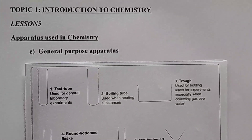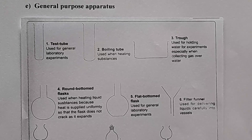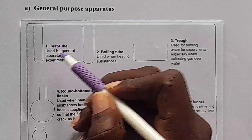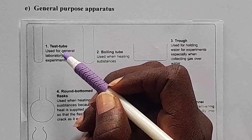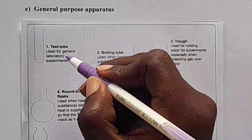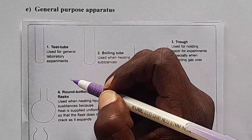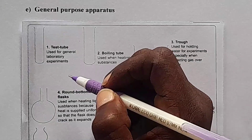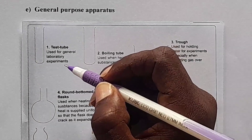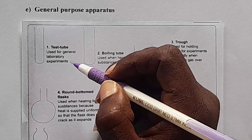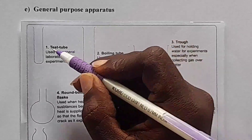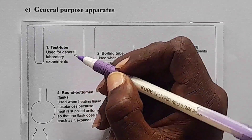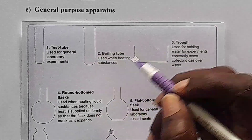Okay, there are very many. We are going to start with number one — it is a test tube. So, what is the use of a test tube? The use of a test tube: it is used for general laboratory experiments. So during the exam, they will be giving you the name of the apparatus and you are told the use of that apparatus. If you are given a test tube, the use is: used for general laboratory experiments.